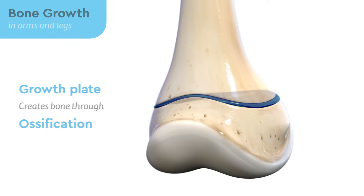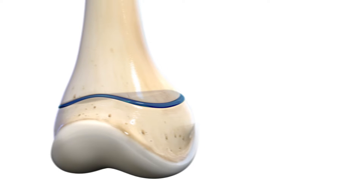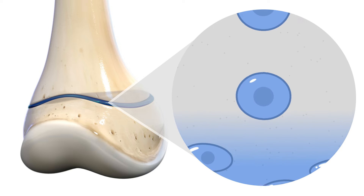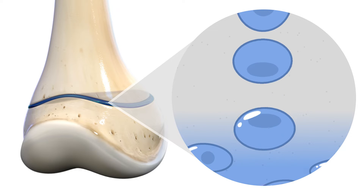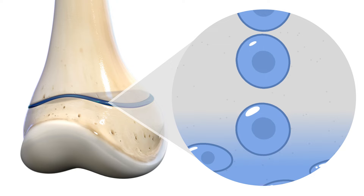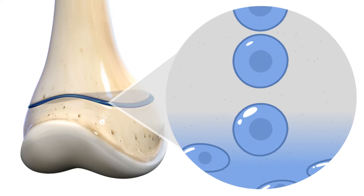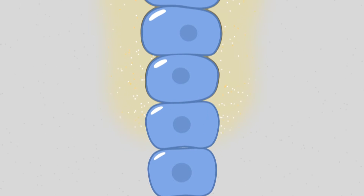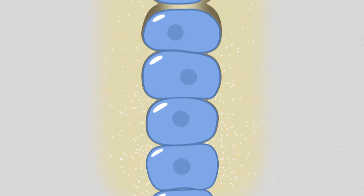Ossification begins when cartilage cells start to divide. As more cells divide, they push a stack of cells outward.